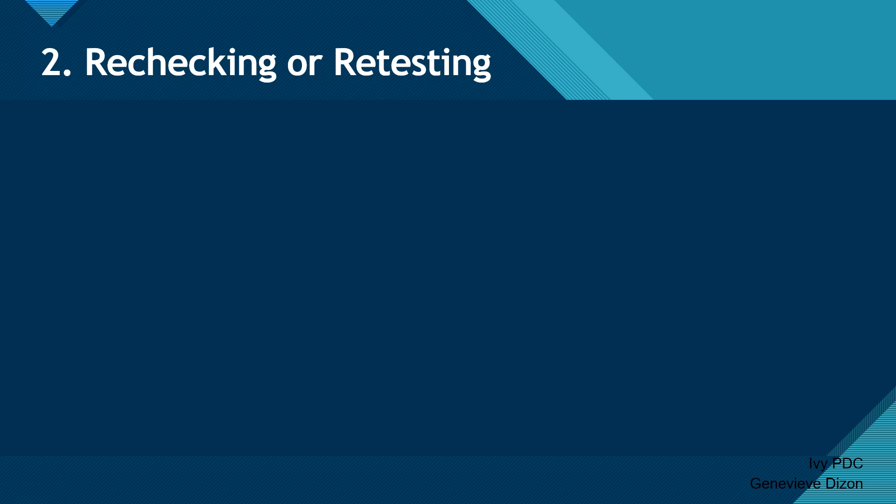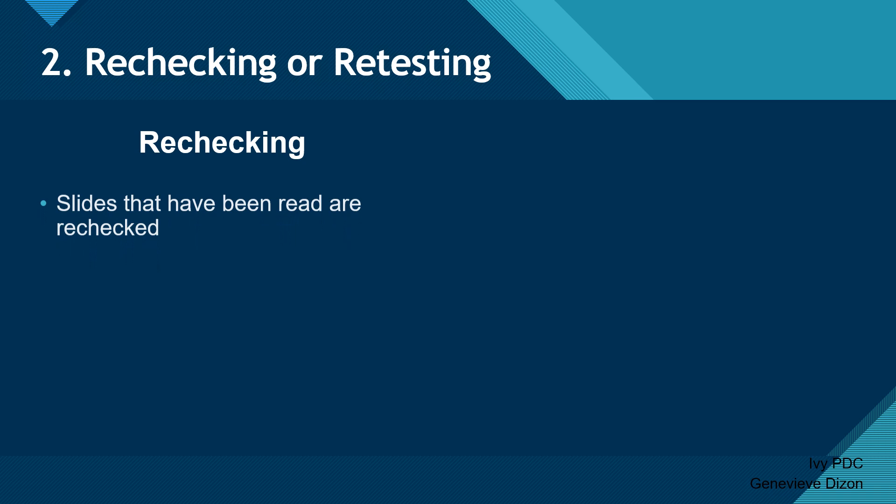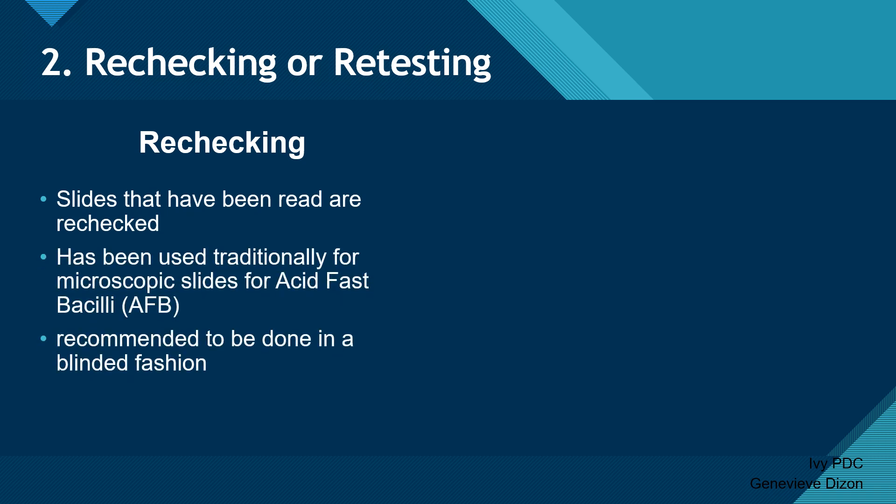The second type of EQA is rechecking or retesting. Rechecking is when slides that have already been read are rechecked again by a different laboratory. This is traditionally used for microscopic slides for acid-fast bacilli or AFB. The recommendation is that a blinded method should be performed, meaning the laboratory doing the rechecking does not know the original result of the first laboratory. After rechecking, they compare their results with those from the laboratory that originally released the results, and these results should match; if not, certain procedures should be followed.